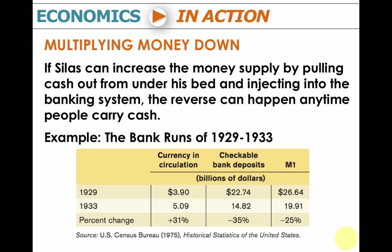What we found in the Great Depression was that the amount of currency in circulation increased, and the number of checkable bank deposits decreased. So the money supply actually decreased because the money multiplier decreased.